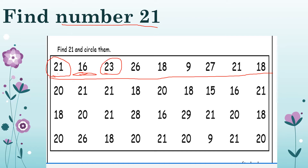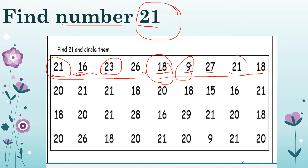This one is number 23, so it's not 21. Next — this one is number 21. Next — this one is number 9, not 21. Next is 27. And this one is the same as 21 — very good.